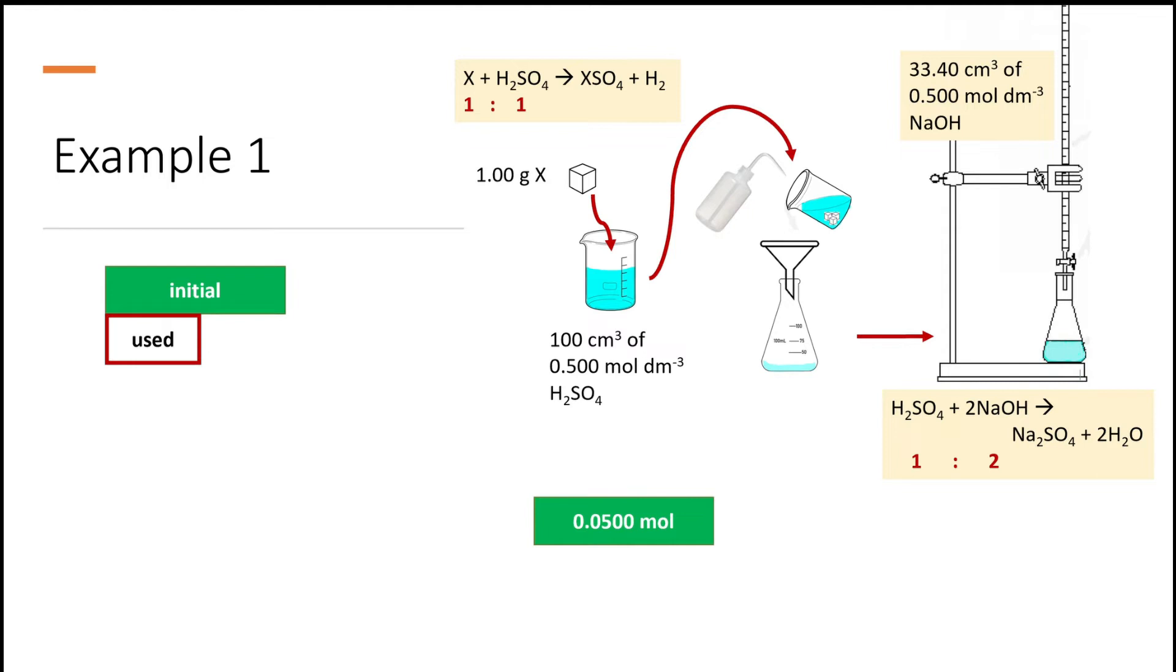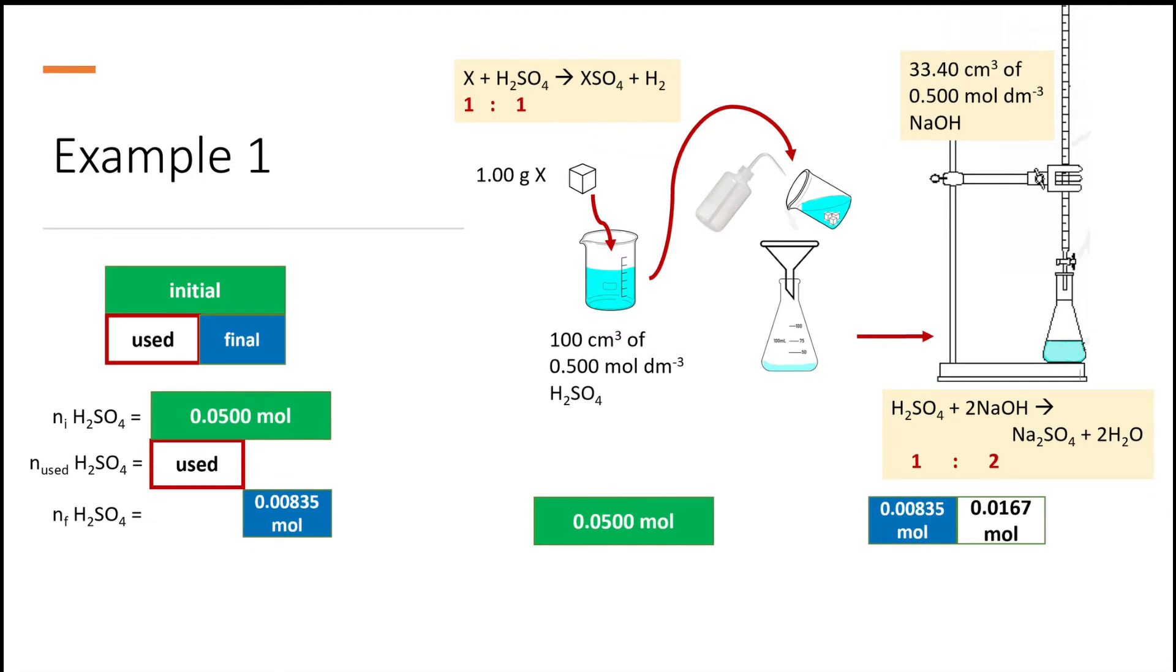We don't know how much of this excess sulfuric acid reacts with the metal X. The remaining acid is neutralized by 33 ml of 0.5 molar sodium hydroxide, that is 0.0167 mole. The molar ratio between sulfuric acid and sodium hydroxide is 1:2, so the number of mole of sulfuric acid must be 0.00835 mole. Put them all together we get this.